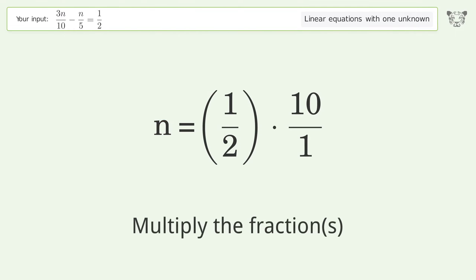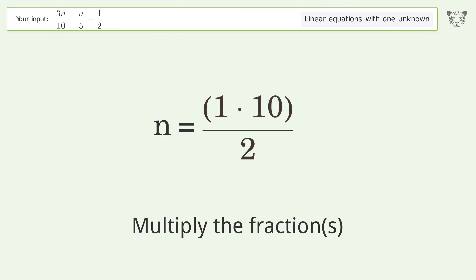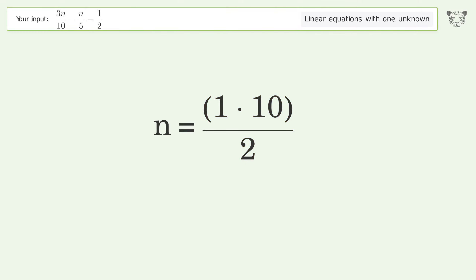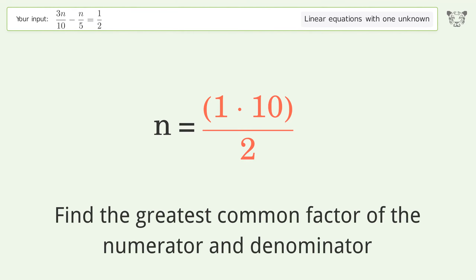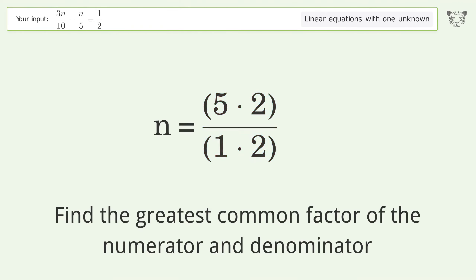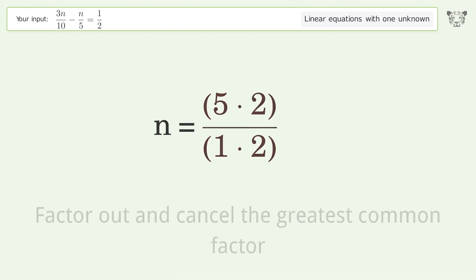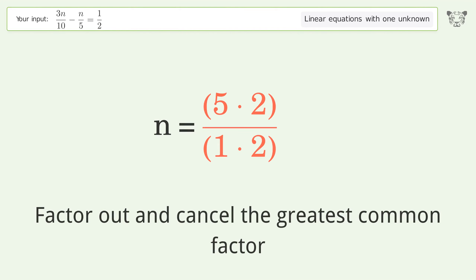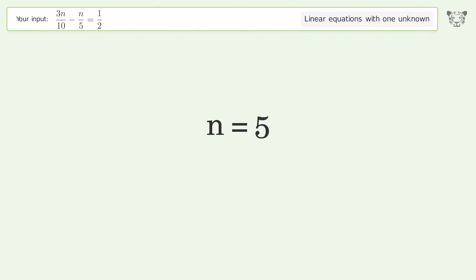Multiply the fractions. Find the greatest common factor of the numerator and denominator, then factor out and cancel the greatest common factor. And so the final result is n equals 5.